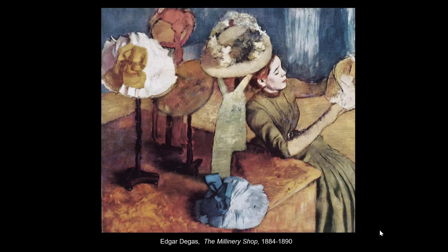The first method for creating visual unity we're going to talk about is repetition. When I look at this image — a painting by Edgar Degas — there's something that is obviously being repeated.